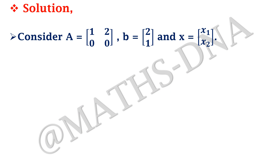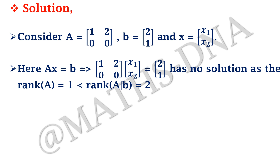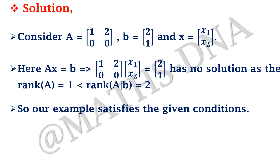We solve using an example. Let A = [[1, 2], [0, 0]], B = [2, 1], and X = [X₁, X₂]. Then AX = B has no solution because rank(A) = 1 is less than rank of the augmented matrix [A|B] = 2. This example satisfies the given conditions. A quick way to remember: when the last row of A is all zeros and the last element of B is non-zero, you get no solution.